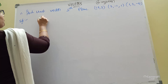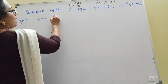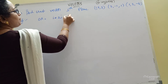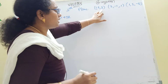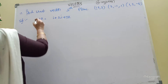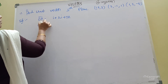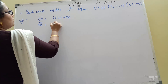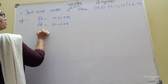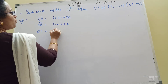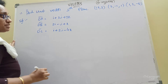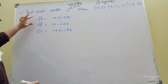We have OA bar equal to i plus 2j plus 3k. OB bar equal to 2i minus j plus k. OC bar equal to i plus 2j minus 4k. These are the position vectors OA, OB, OC.